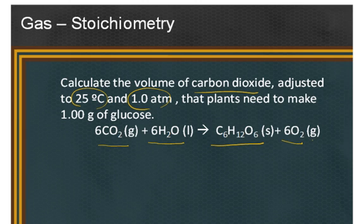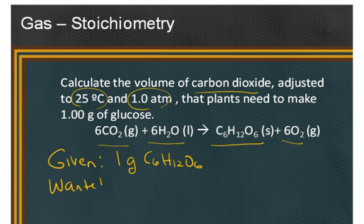To work this problem, the first thing we need to identify is what's given. In this case, what's given is 1 gram of glucose, C6H12O6. We want to see how much in volume of carbon dioxide it takes to make that amount of product. So what's wanted then is how many liters of carbon dioxide will be needed at a temperature of 25 degrees Celsius and a pressure of 1 atmosphere.